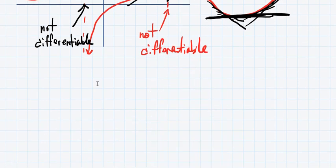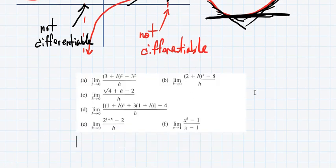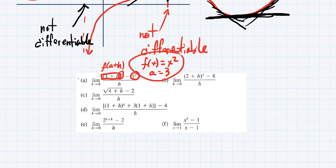Let me just get it on here for you. So look, this is f of a plus h. So we have something plus h all squared. Here I have something squared. So f of x is x squared. What is a then? Three. Easy. So that's the answer for 1a.